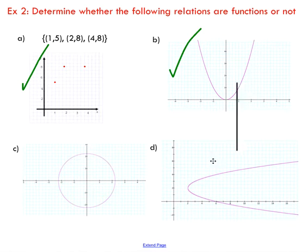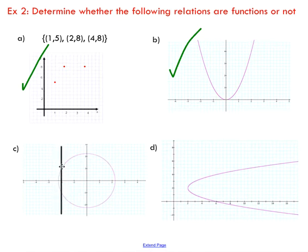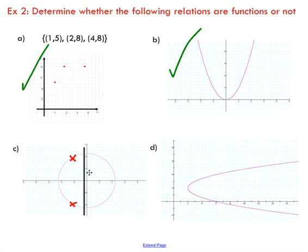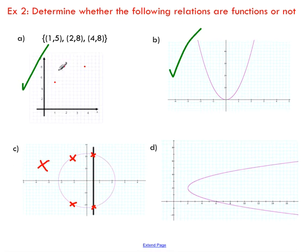Moving down to part C: looking at this circle, I pass this line through my relation and you can see there are definitely a couple of spots where we violate the vertical line test. There are two points on that vertical line, and if I keep moving my vertical line, there will always be two points on it. This relation is definitely not a function.